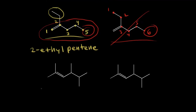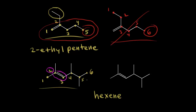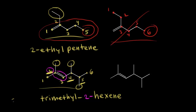Let's name this next compound. Numbering from left to right: carbon one, two, three, four, five, and six — a six-carbon alkene, called hexene. The double bond starts at carbon two, so this is 2-hexene. Now let's think about substituents: we have a methyl group at carbon two, another methyl at carbon four, and another methyl at carbon five. Three methyl groups is trimethyl. So the name is 2,4,5-trimethyl-2-hexene.